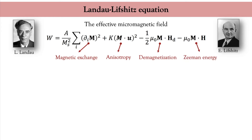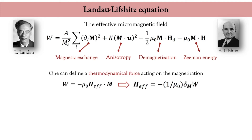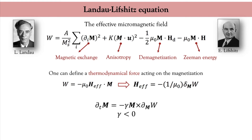From the total magnetic energy we can define a thermodynamical force that acts on the magnetization exactly like an effective magnetic field. This idea was put forward by Lev Landau and Evgeny Lifshitz. The effective field is defined as the variational derivative of the magnetic energy. Using the Larmor equation with this effective field, we obtain a phenomenological equation of motion for the magnetization called the Landau-Lifshitz equation.